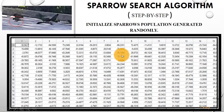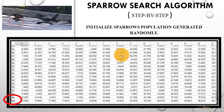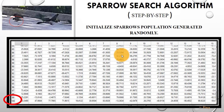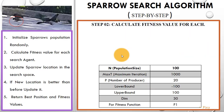You can see here this is the population generated for 100 search agents randomly. Step 1 is done — that is the initialization of search agents randomly. Now we will compute the fitness value for each search agent, for which you can use any fitness function.